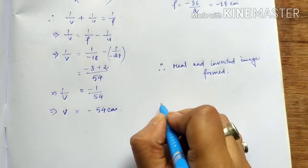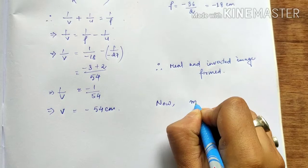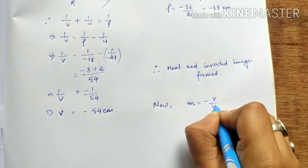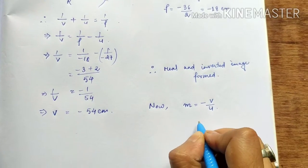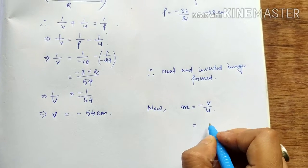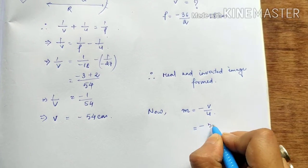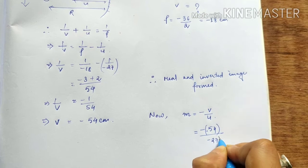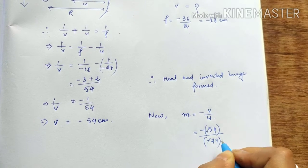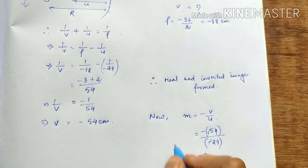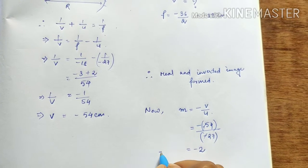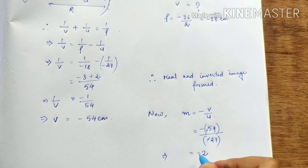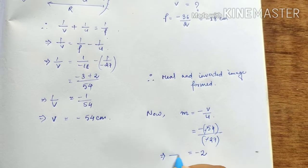Now, what is the magnification? Mirror magnification is minus V by U. The value is minus 54 divided by minus 27 — the minus signs cancel — giving magnification of minus 2.